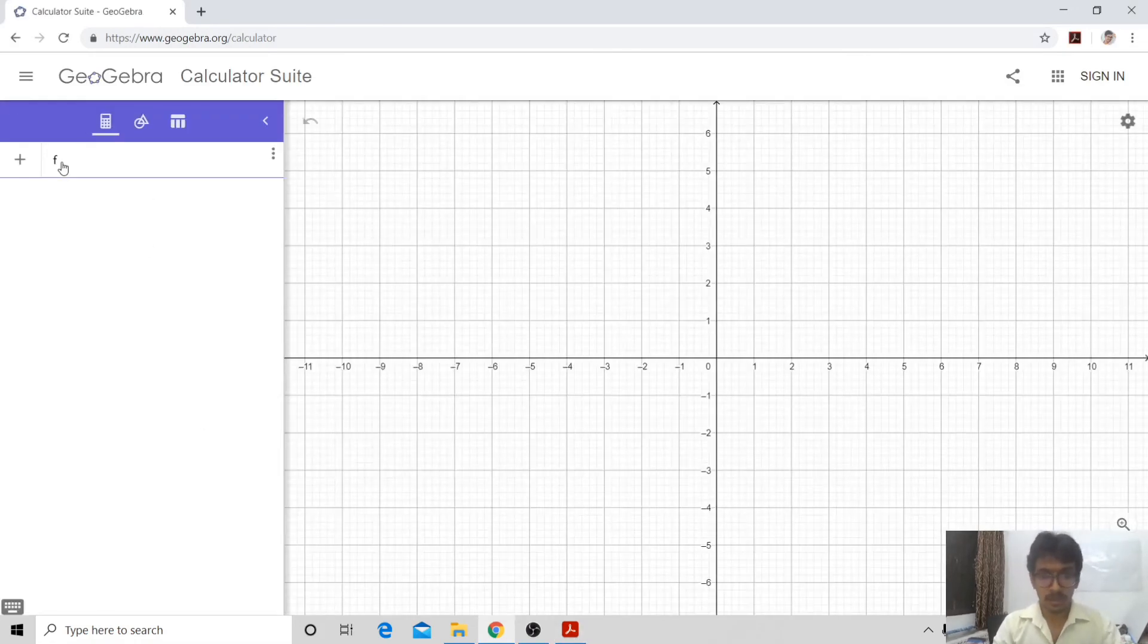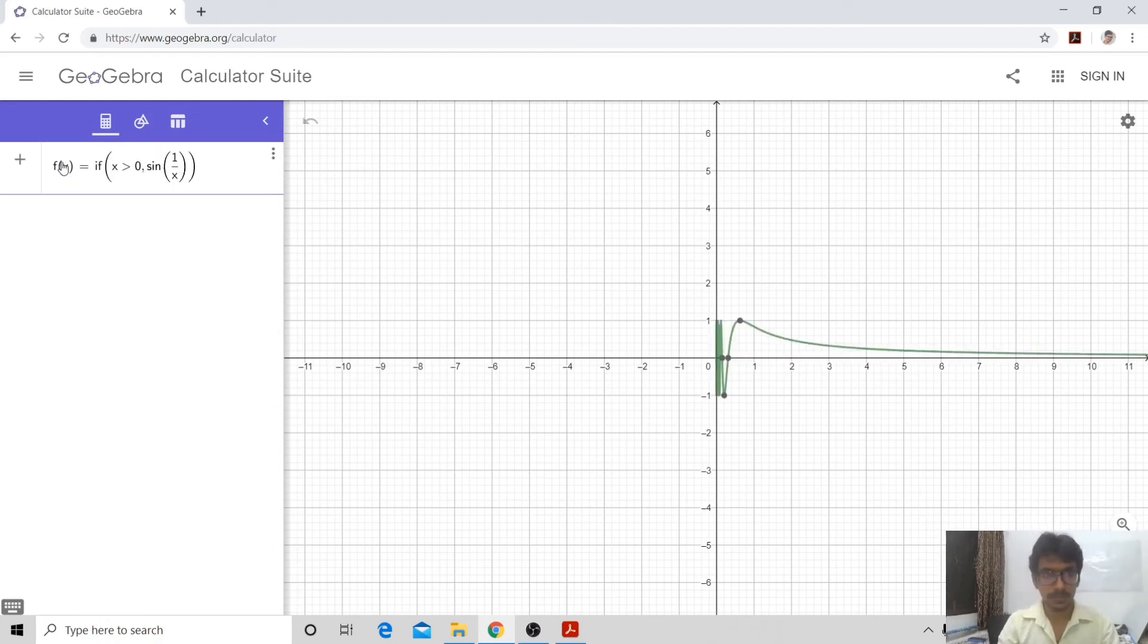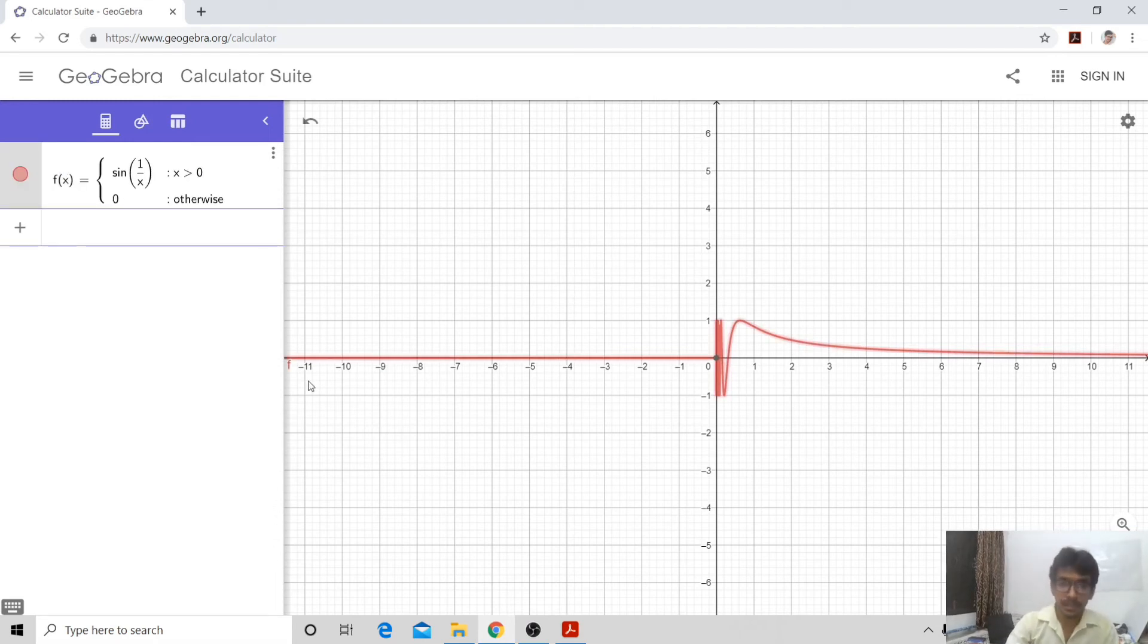My f(x) is to be defined in the form of, when my x is positive, it is sin(1/x), and for rest of the case, it is 0. Here you may very well see that the function is behaving smoothly in the negative side and there is an oscillation in the positive side for a certain while.